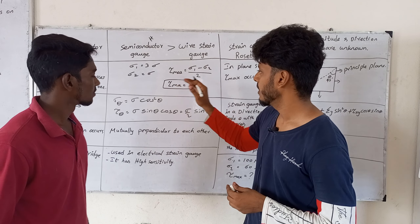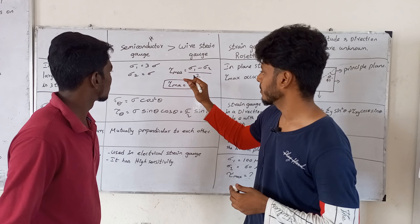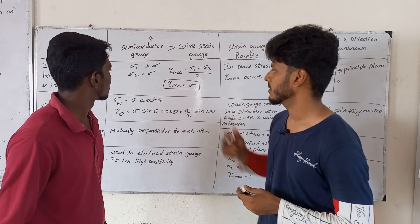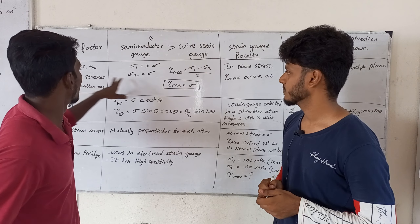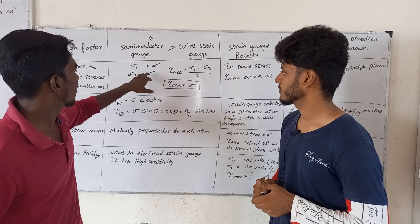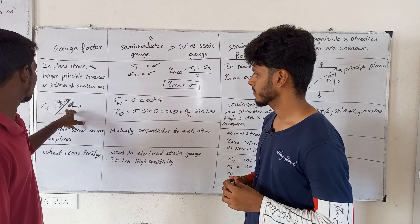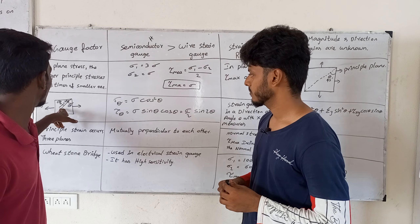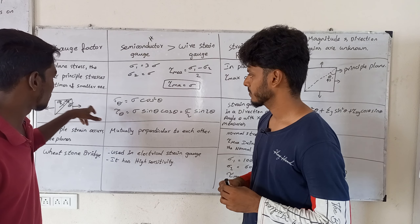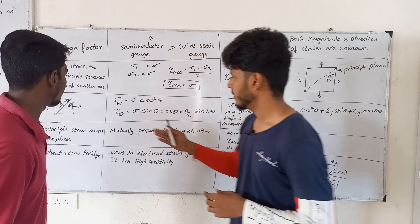Then the maximum shear stress is equal to the smaller principal stress. For sigma-1 and sigma-2, tau-max is equal to sigma. That is, at the principal plane, both the normal stress and shear stress can be used to solve for the two unknowns.